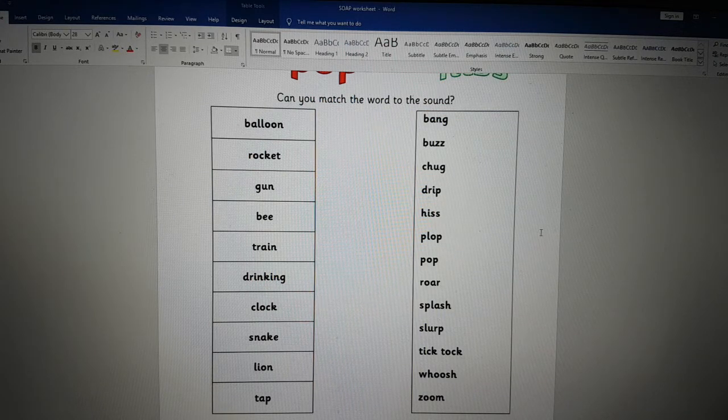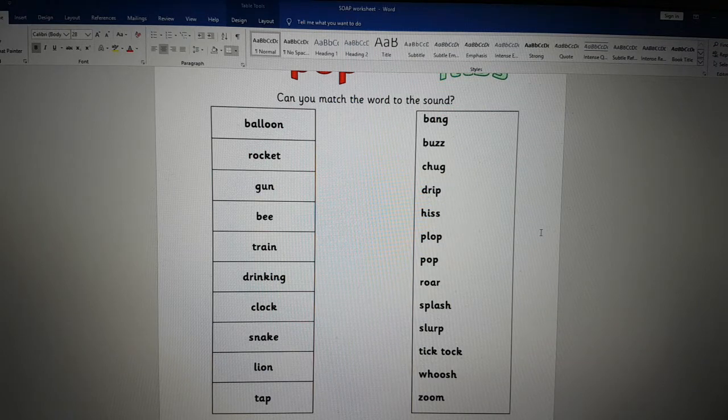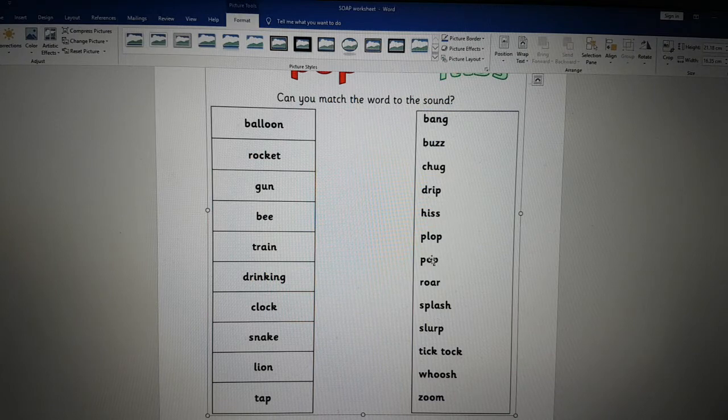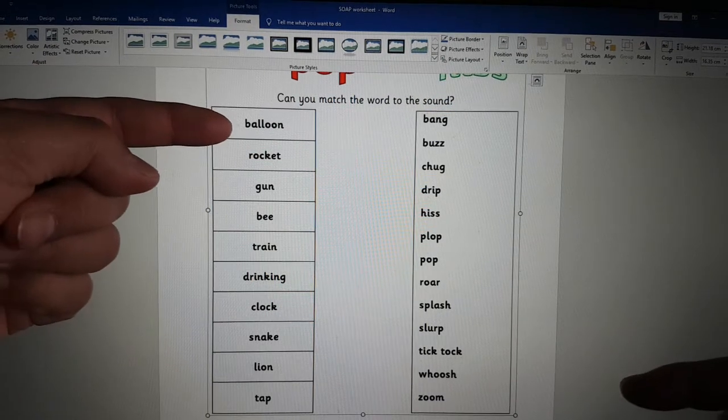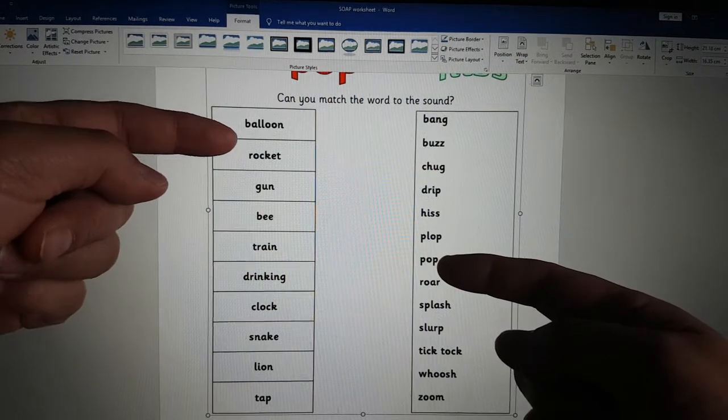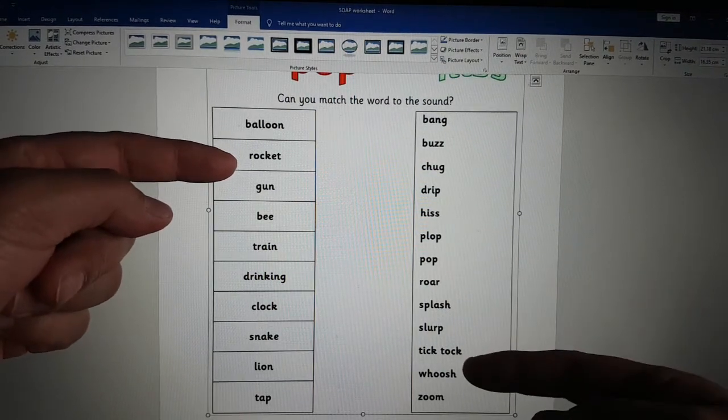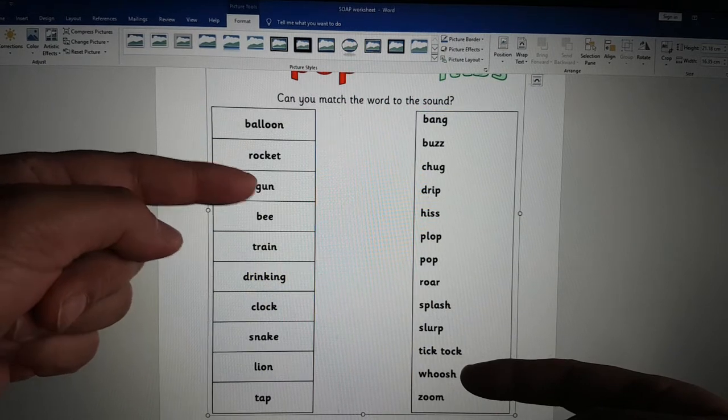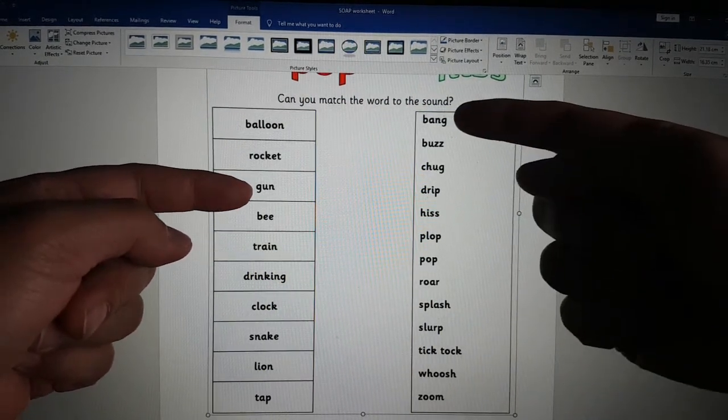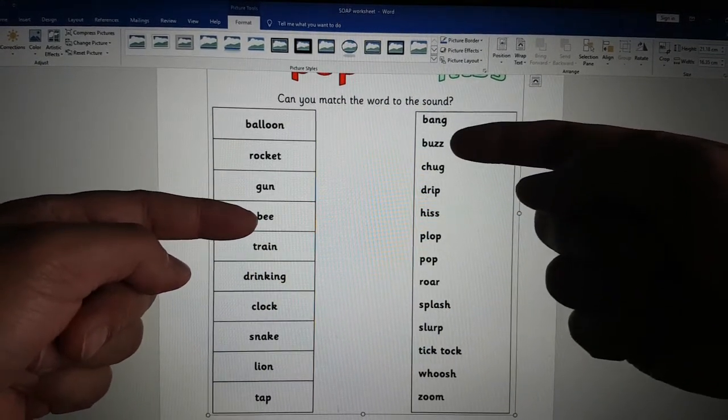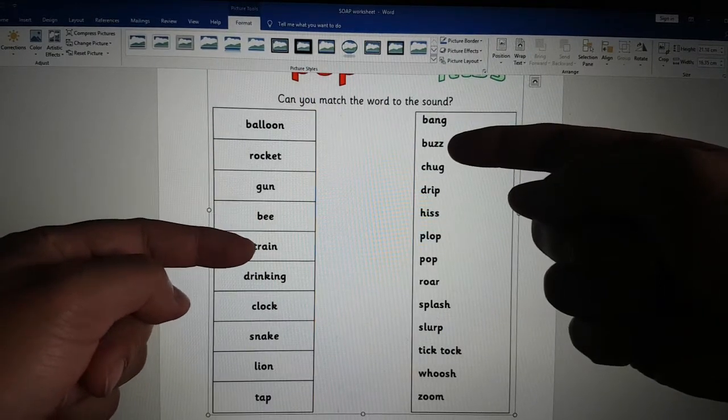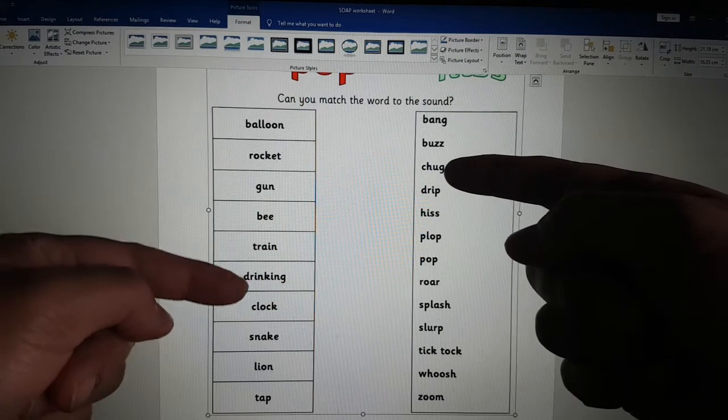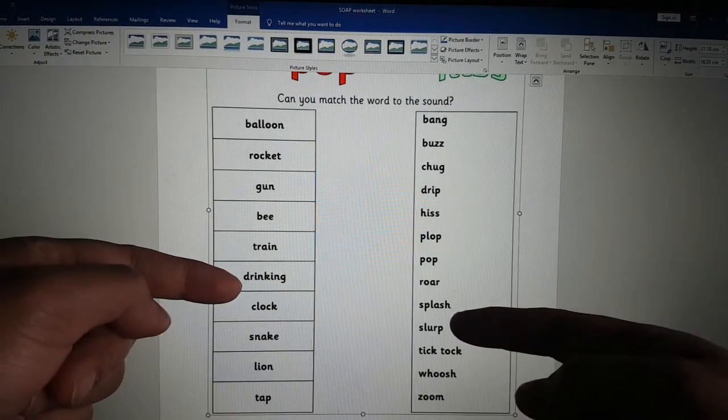Here are the answers. A balloon will pop. A rocket will whoosh as it flies in the air. A gun will bang. A bee will buzz. A train usually will chug along. Chug, chug, chug, the engine. Drinking will be a slurping sound.